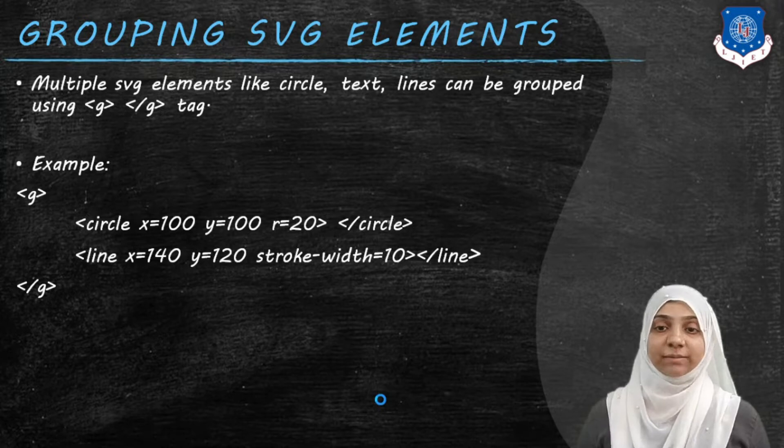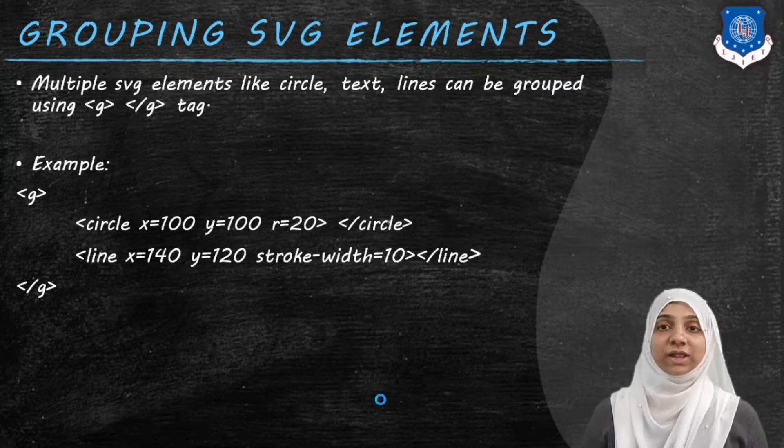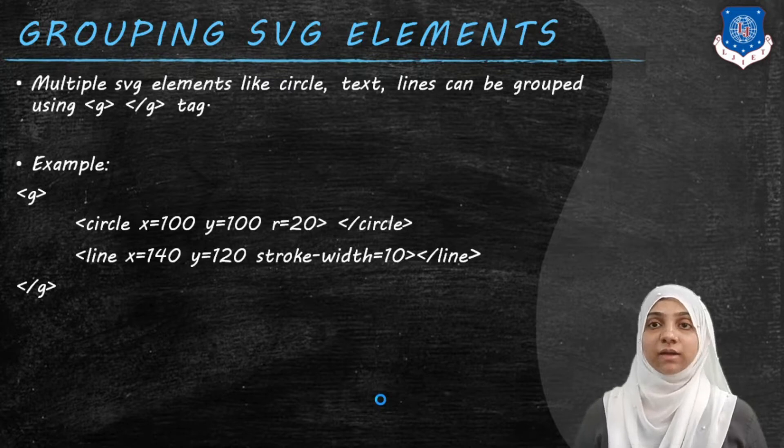SVG elements like shapes of circle, ellipse, rectangle, as well as text, all these can be grouped together under a single tag that is called as G tag.